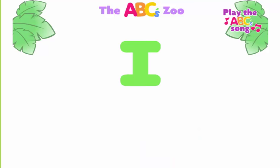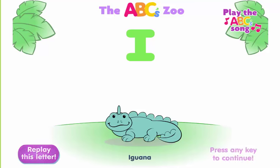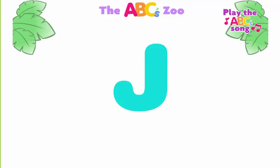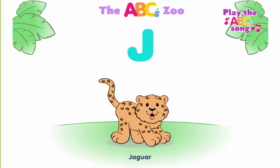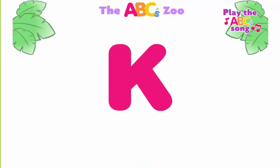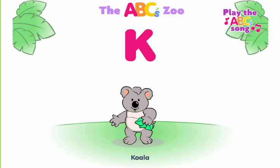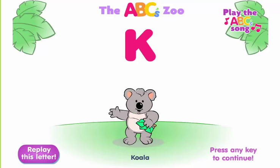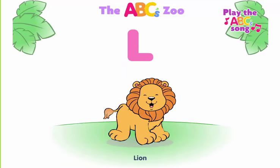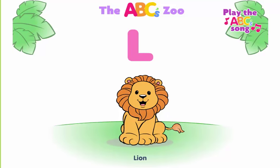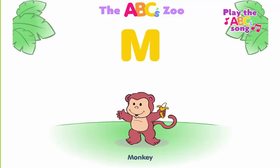I, iguana begins with I. J, jaguar begins with J. K, koala begins with K. L, lion begins with L. M, monkey begins with M.